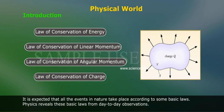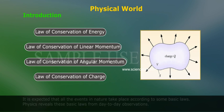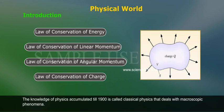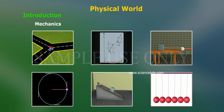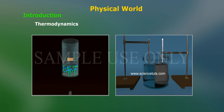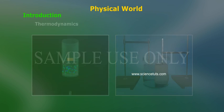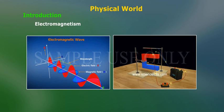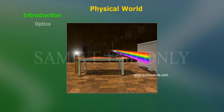Physics reveals these basic laws from day-to-day observations. The knowledge of physics accumulated till 1900 is called classical physics that deals with macroscopic phenomena. It includes subjects like mechanics, thermodynamics, electromagnetism and optics.